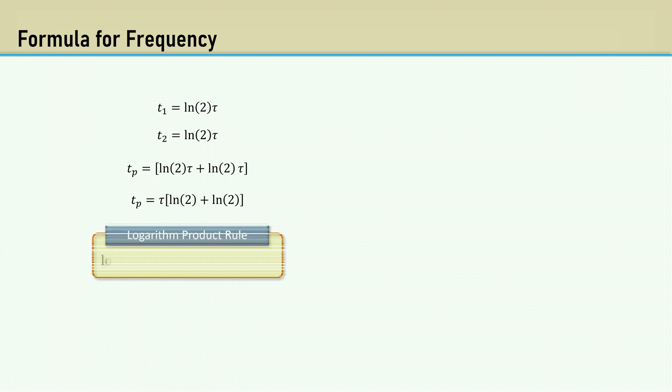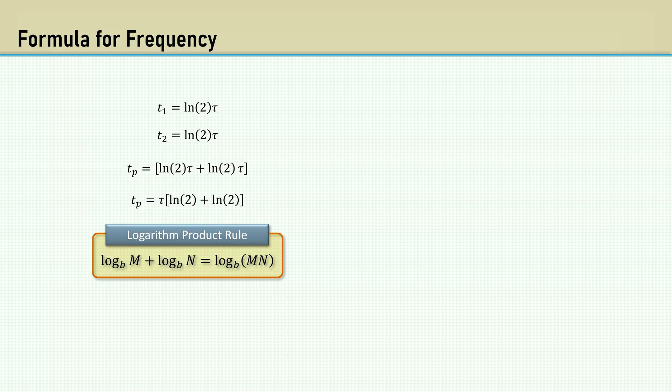We can simplify by using the logarithm product rule, where the log of M plus the log of N equals the log of MN, which gives us tau times the natural log of four.